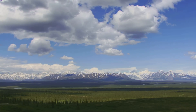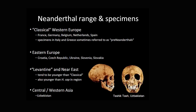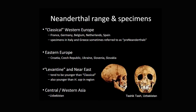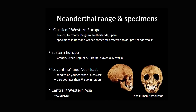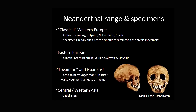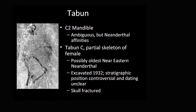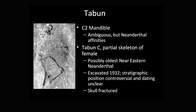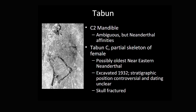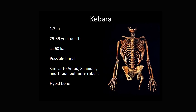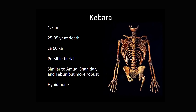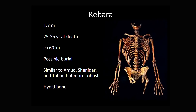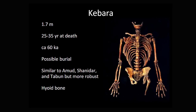Studies suggest Neanderthals primarily engaged in close-range hunting, requiring accurate depth perception; larger eyes would have provided improved binocular vision, enabling them to accurately judge distances and effectively hunt prey. In dense forests, larger eyes would have been beneficial for navigating complex vegetation and identifying objects in shadowed areas. Additionally, Neanderthals engaged in complex social behaviors and likely relied on nonverbal communication; larger eyes may have facilitated enhanced recognition of facial expressions, gestures, and body language among group members.